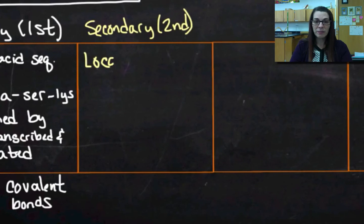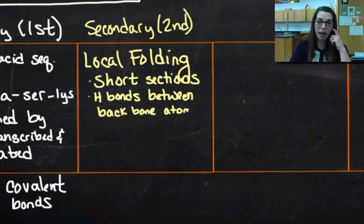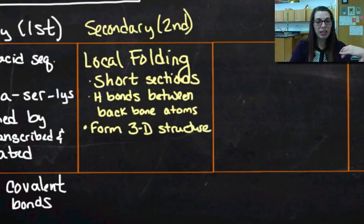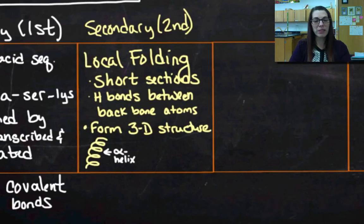My secondary structure is going to be local folding. So I'm looking at really short sections of my protein, and you're going to get hydrogen bonds that happen between the backbone atoms. So really you're going to get hydrogen bonding between the amino groups and the carboxyl groups, because if you look, the molecule kind of becomes polar. And then as it folds up, you're going to get some sections that are going to be positively charged and some sections that are negatively charged. So it's all going to form a 3D structure, and it's primarily going to form this corkscrew shape, which we call an alpha helix.